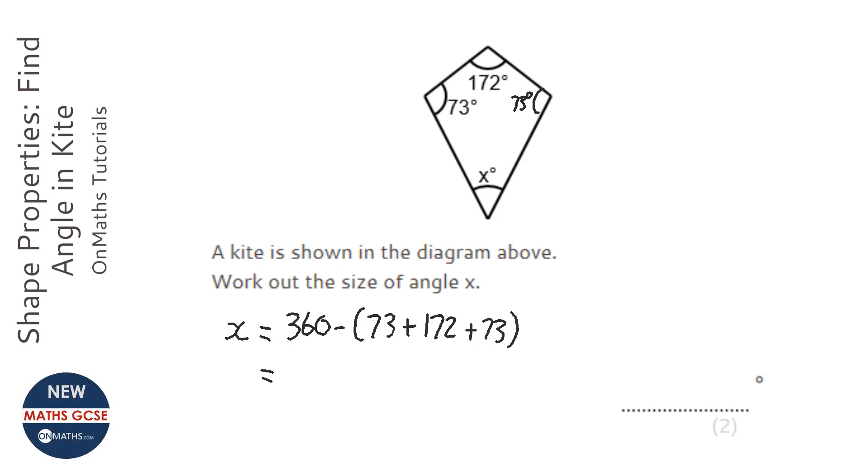So on the calculator, 360 take away all the angles that I know, because the quadrilateral adds up to 360, and that leaves 42 degrees. So my answer is 42 degrees.